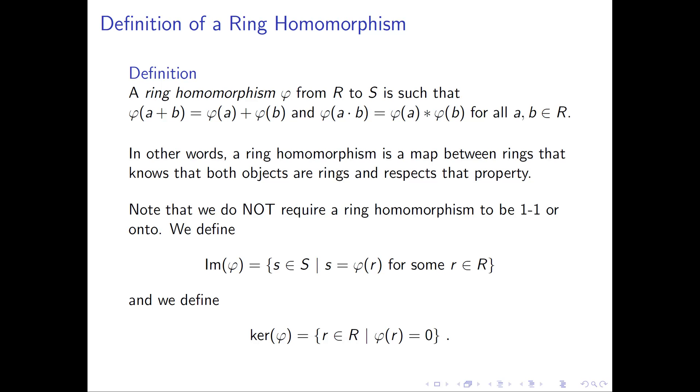The first definition is the image of phi, written Im of phi. This is the collection of elements inside the ring S that are actually hit by some element of R, they're actually mapped to by an element little r of capital R. The next thing we're going to define is the kernel of this map, written ker of phi. This is the set of ring elements inside the ring R that map to the additive identity of S, that map to zero. This is what really makes sense for us. Sometimes there can be confusion between additive identity and multiplicative identity, but remember that in general we don't require rings to have a multiplicative identity. So our kernel of phi is going to coincide with the group theoretic definition of the kernel of a map, and it's going to be all of the things inside the original ring that map to the additive identity, the zero element of the ring S.